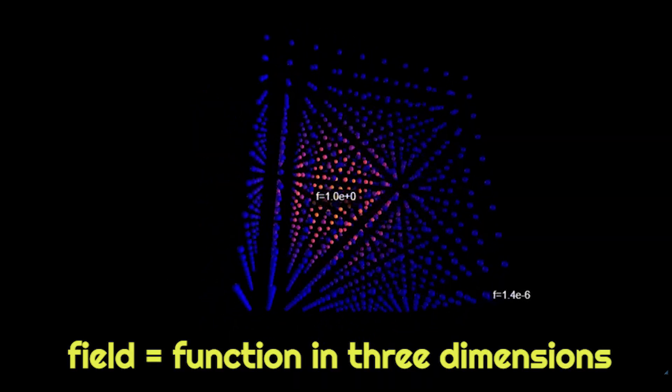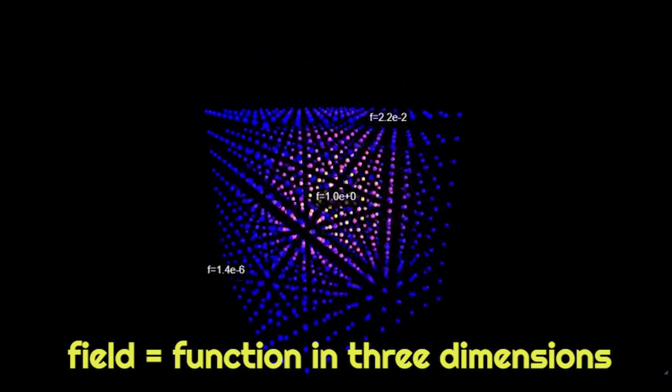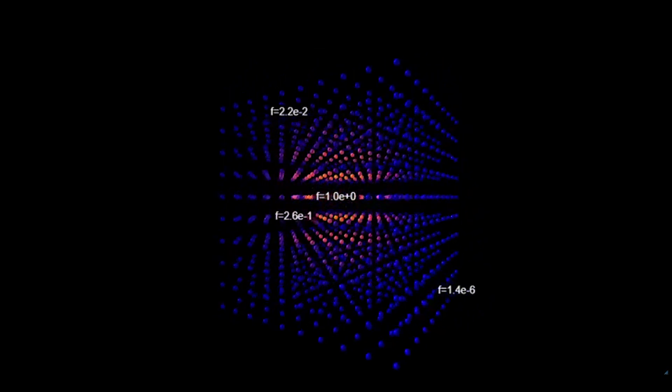In advanced physics we frequently talk about fields. Field is a fancy word for function in three dimensions. The idea of a field is that the function has a value at each point in space at the same time.